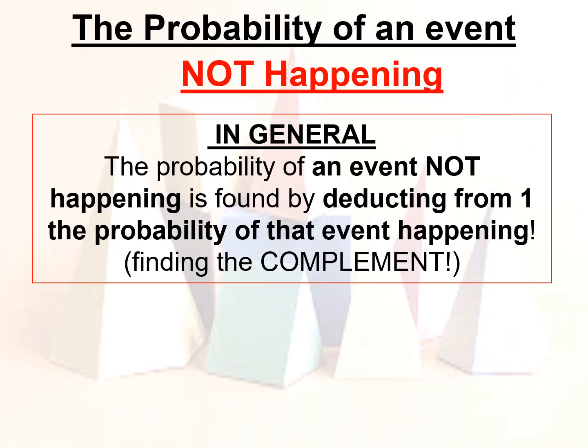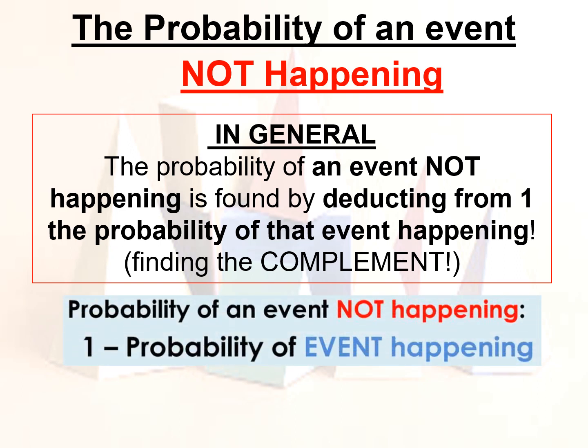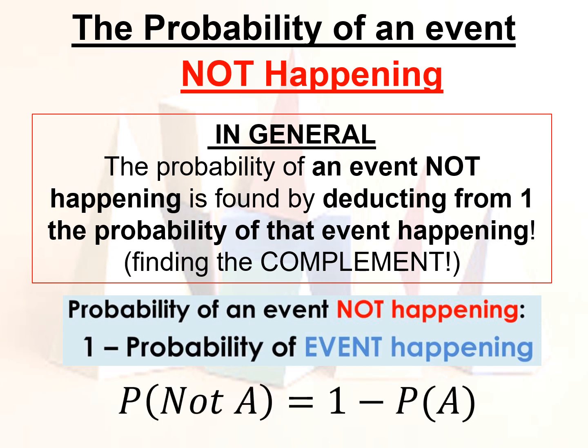In general, the probability of an event not happening is found by deducting from 1 the probability of that event happening, or finding the complement. In short, the probability of an event not happening is 1 minus the probability of the event happening. In symbols: P(not A) = 1 minus P(A).